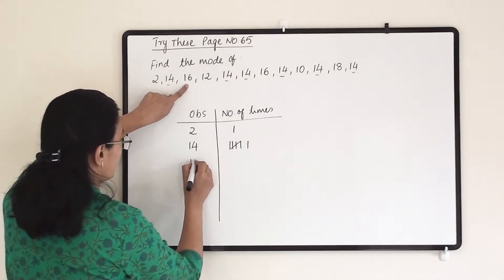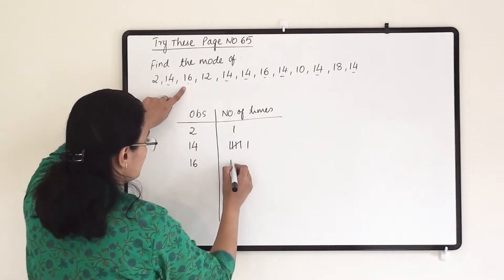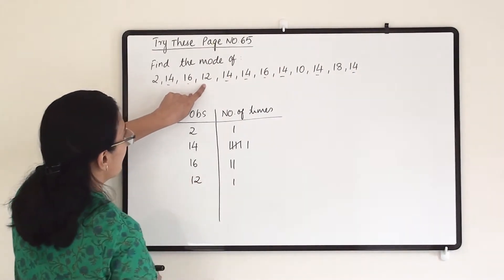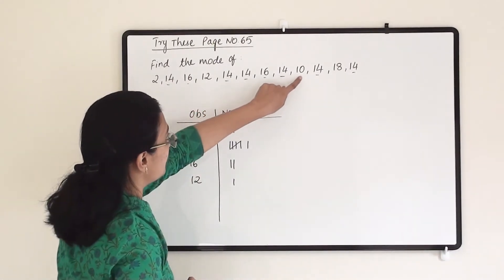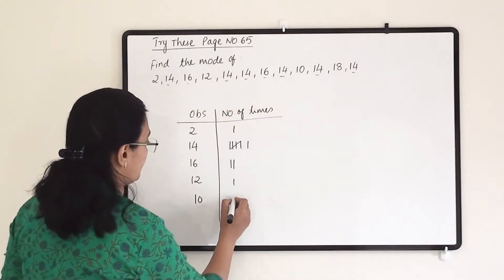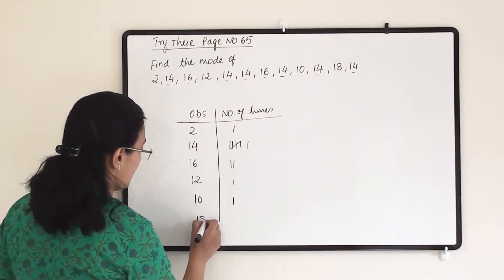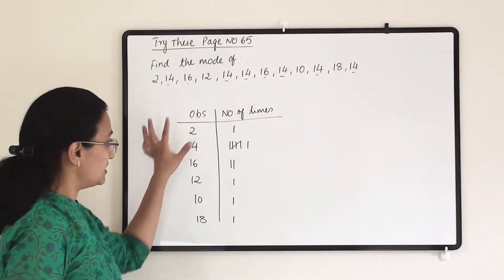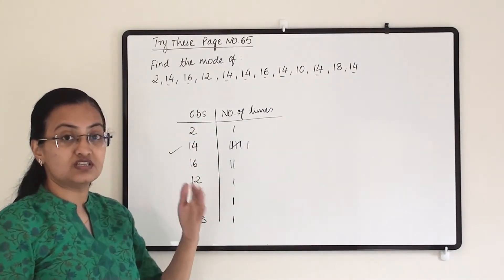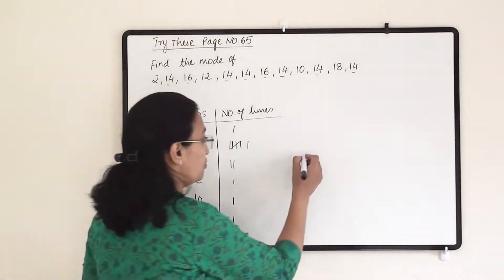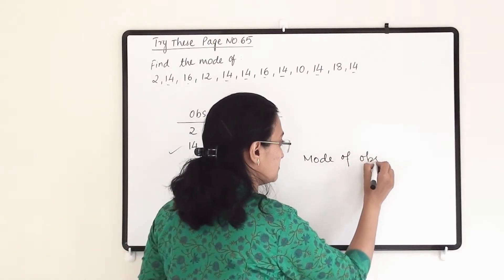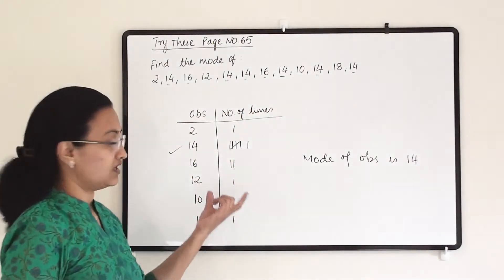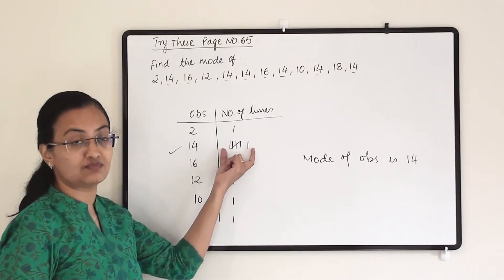Then 16 is coming twice. Then 12 is coming only once. Then 10 is coming only once. Then 18 is coming only once. The rest are all 14, which we have already covered — that is six tallies. Clearly, 14 is the observation appearing the maximum number of times. So the mode of these observations is 14, because it is appearing six times, which is the maximum among all these numbers.